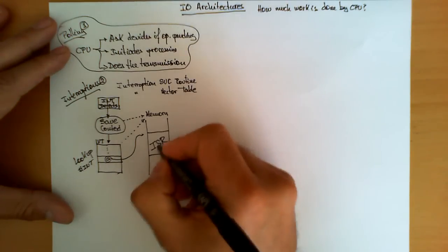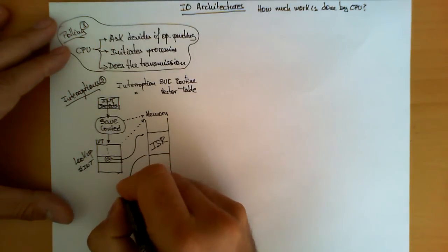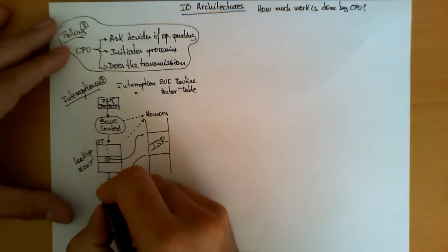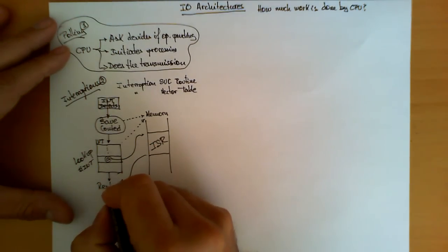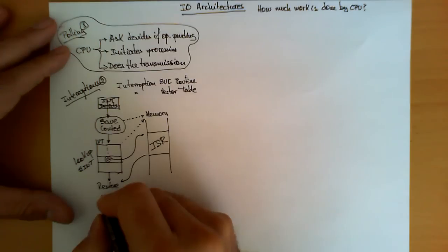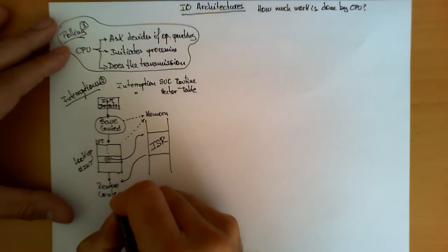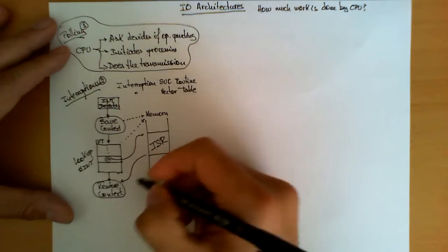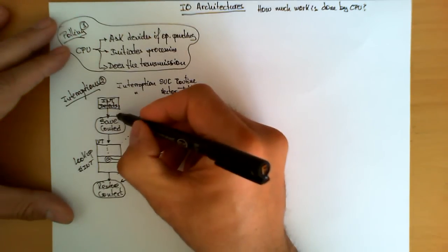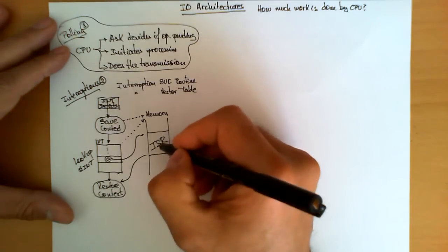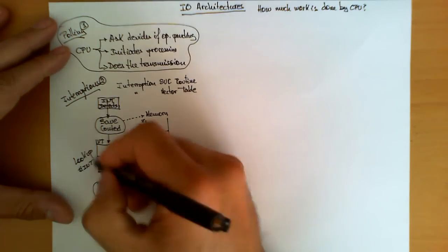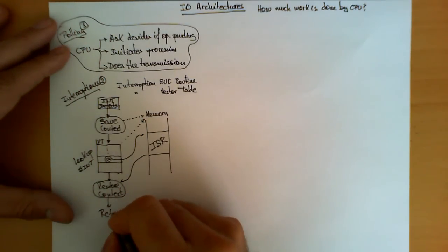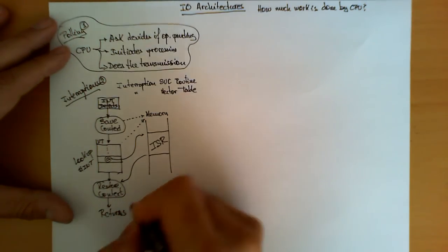After the interruption service routine has been executed, we have to return to the way the CPU was working before, which means first we restore the previously saved context. We leave the CPU exactly as we found it — as if the interruption service routine had not been executed. It's not going to leave any trace on the context of execution, and then the microprocessor returns to regular execution.